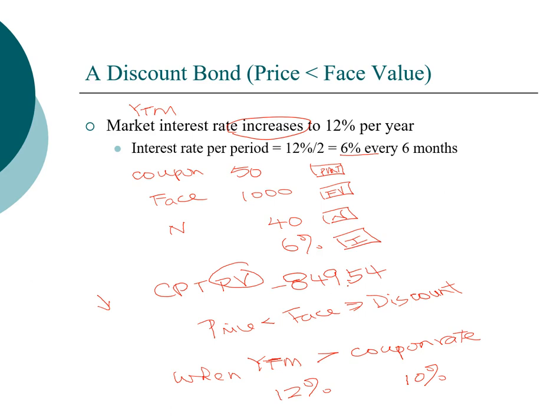Intuitively, think about what's happening in the marketplace. Your bond has a coupon of 10%, but every new bond in the market is now offering 12%. Your bond is no longer competitive. The only way it can compete is to lower its price — from $1000 down to $849 — so that investors get the same return as the new bonds offering 12% per year.